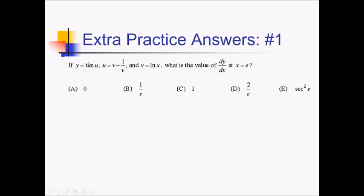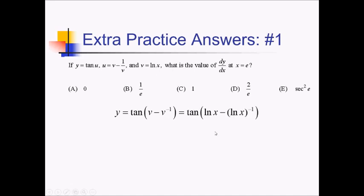I can start by writing y as the tan of v minus 1 over v, which I'm going to write as v minus v to the negative 1, just so I can use my power rule later on. But now I have to actually replace v with something with an x. So I'm going to rewrite this as y equals tan of ln of x minus ln of x to the negative 1. Now that I have everything in terms of x and y, I can go ahead and take the derivative.